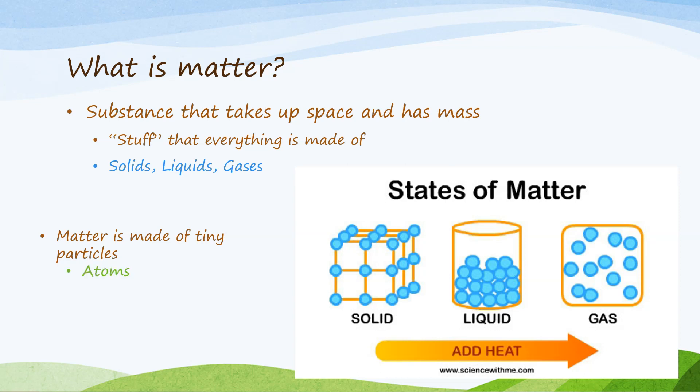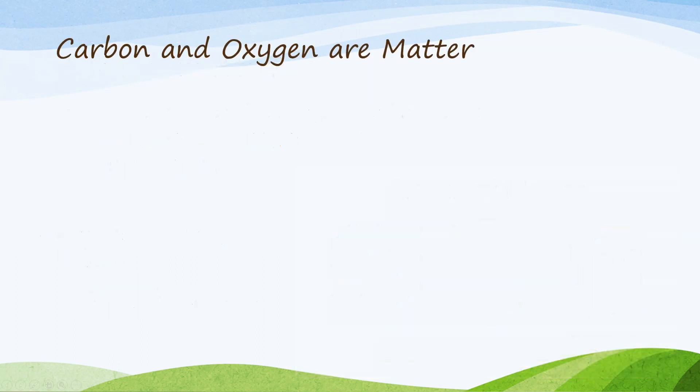We have atoms, which are the smallest units of matter, and then we have molecules, which are the particles made when two or more atoms bond together. The carbon and oxygen cycles are important because they show another example of how matter cycles through the biosphere. Carbon and oxygen are both matter. Carbon is an example of an atom — you can find it on the periodic table of elements.